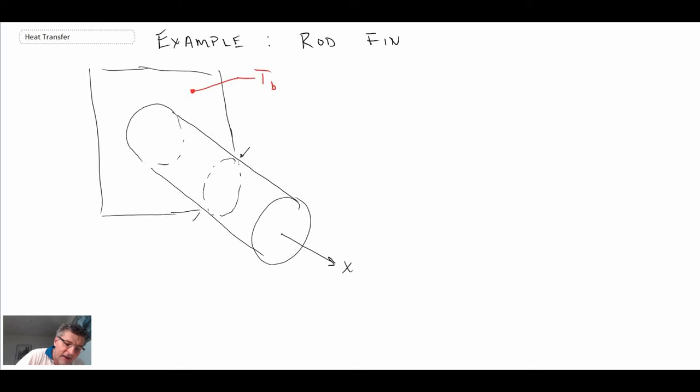And so we will have a diameter that describes the fin. And we will also have some length that we're dealing with. And that would tell us what the length of the fin is. So that is what a rod fin looks like. Not the greatest drawing, but you can figure out what's going on there.